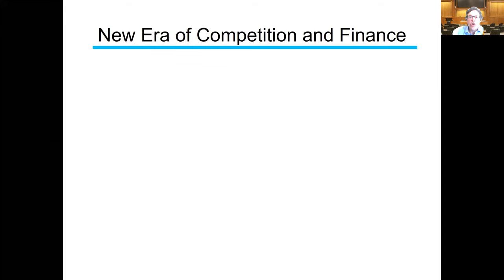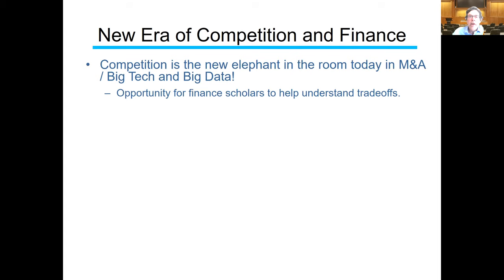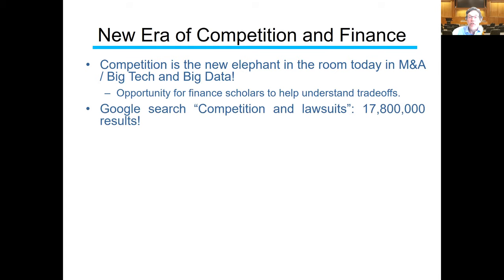I think there's going to be a new era of competition in finance. If you look to the future — maybe ten years from now — we already see competition as the new elephant in the room today: in M&A, big tech, big data. You read the Wall Street Journal and they're talking about competition and these big firms. It's an opportunity for finance scholars to help understand the tradeoffs. We can't just cede this territory to industrial organization economists and the Department of Justice. A Google search for 'competition and lawsuits' returns 17.8 million results.